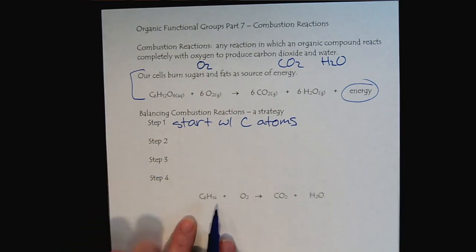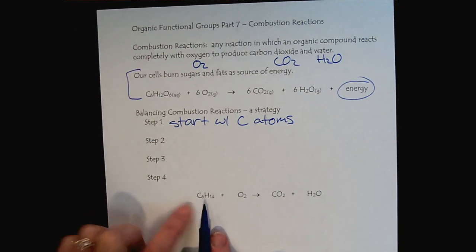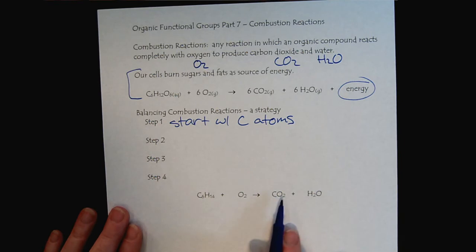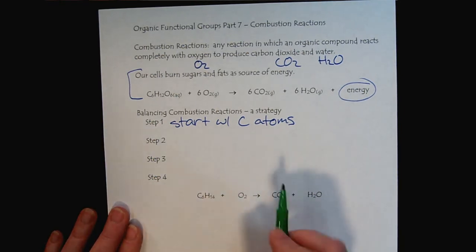If we look at this example here, we see that we have six carbon atoms on the left, and there's our CO2. So we would put a six in front of CO2 to balance.